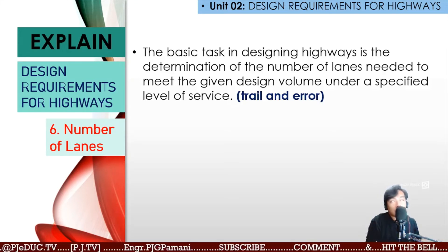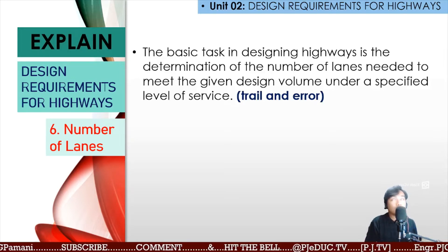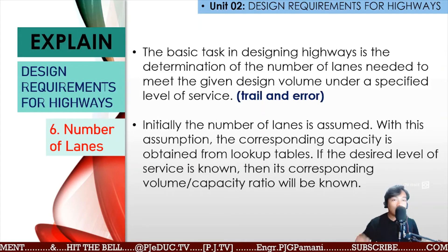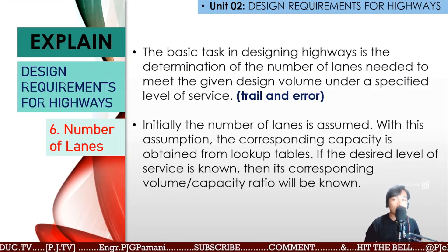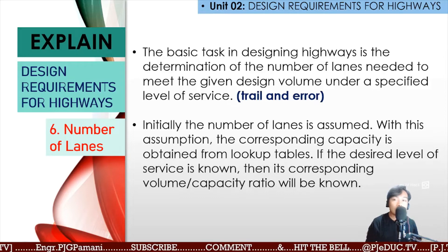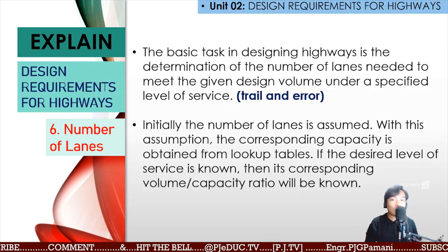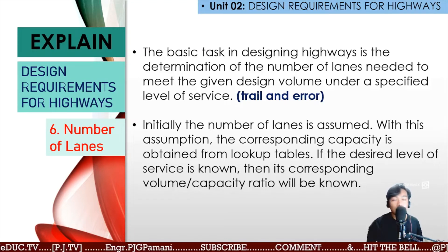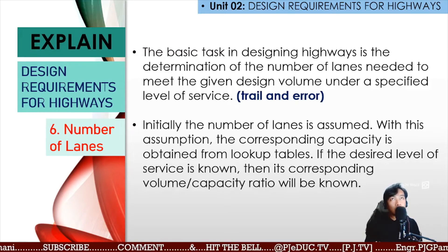We need to count every now and then how many vehicles pass on this road today, next month, next year, and succeeding years. Initially, the number of lanes is assumed for our design, but we always use a minimum number. With this assumption, the corresponding capacity is obtained from lookup tables. If the desired level of service is known, it is compared with the volume-capacity ratio.